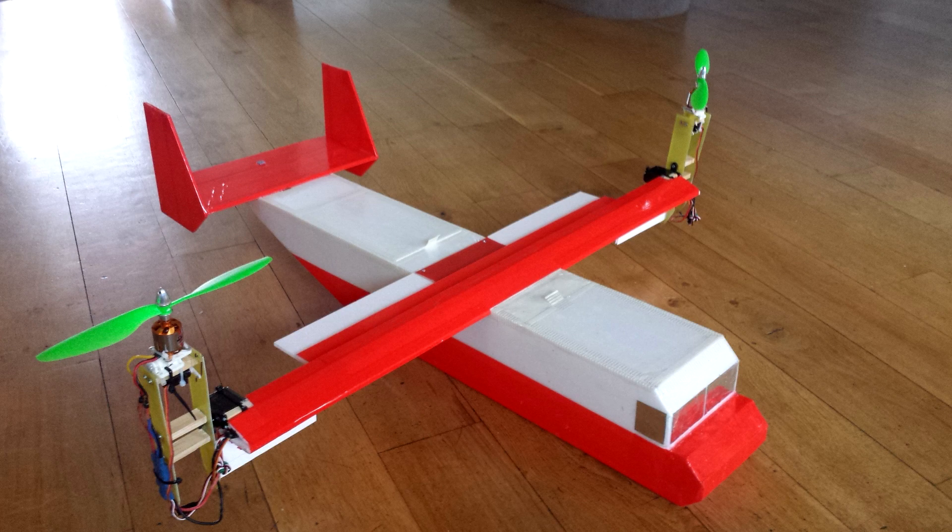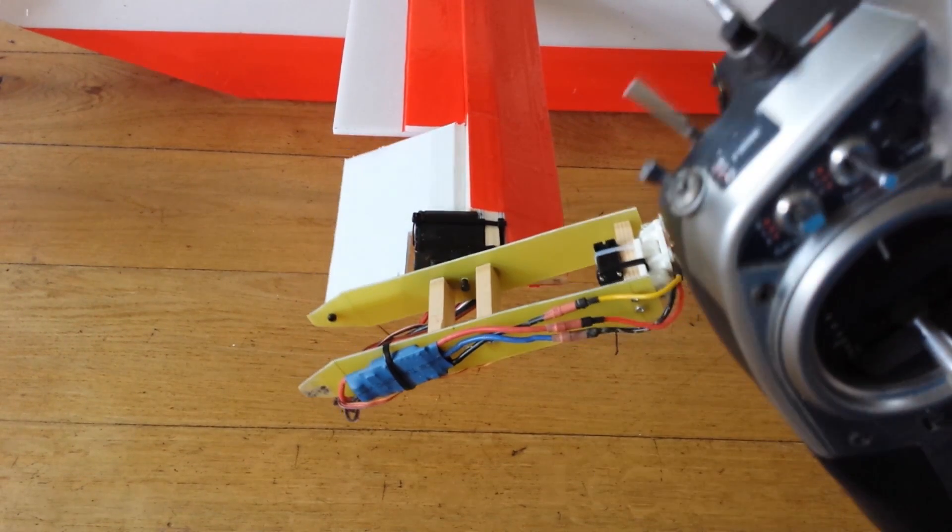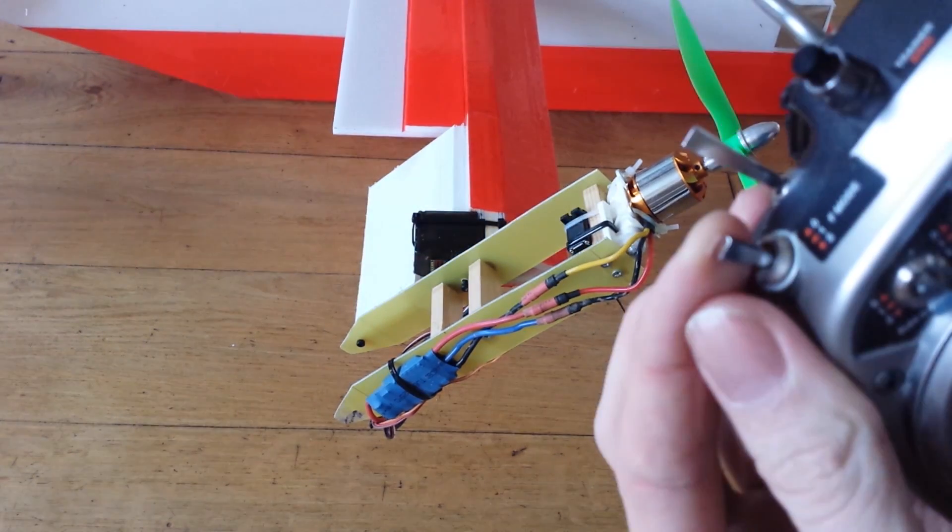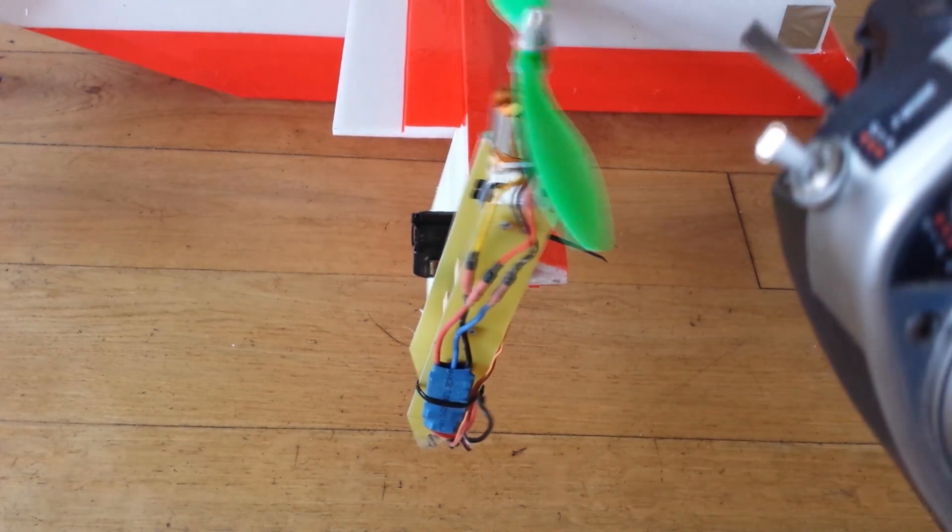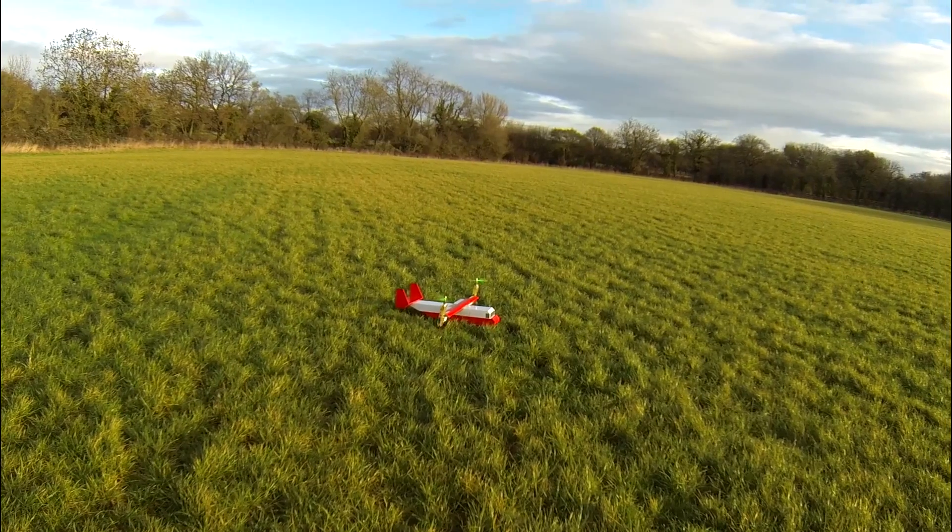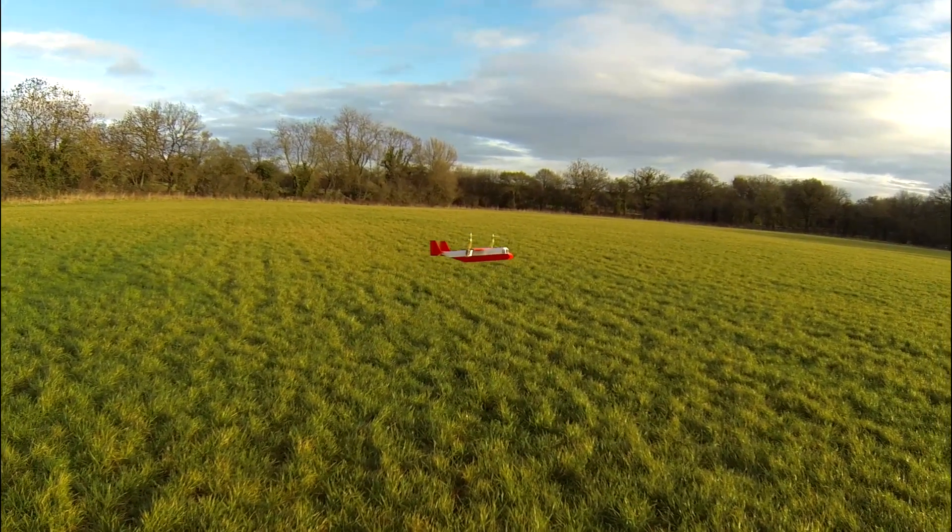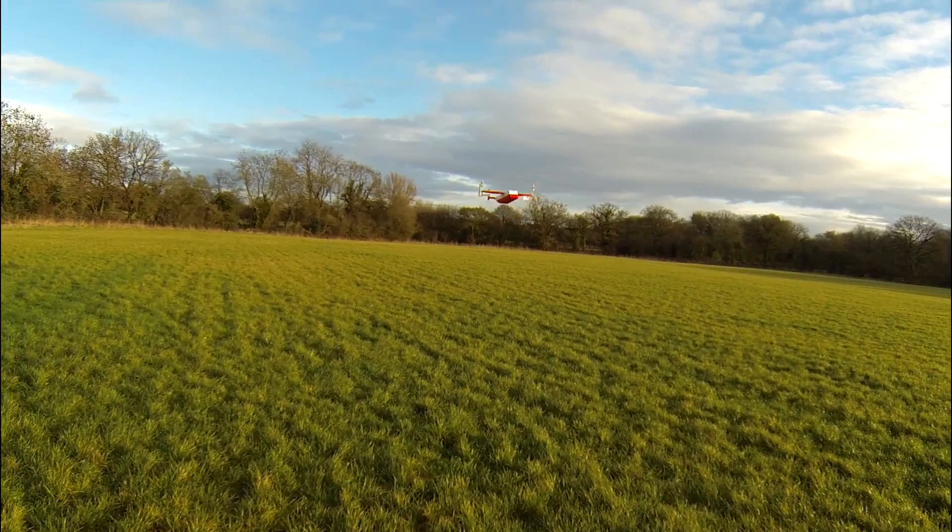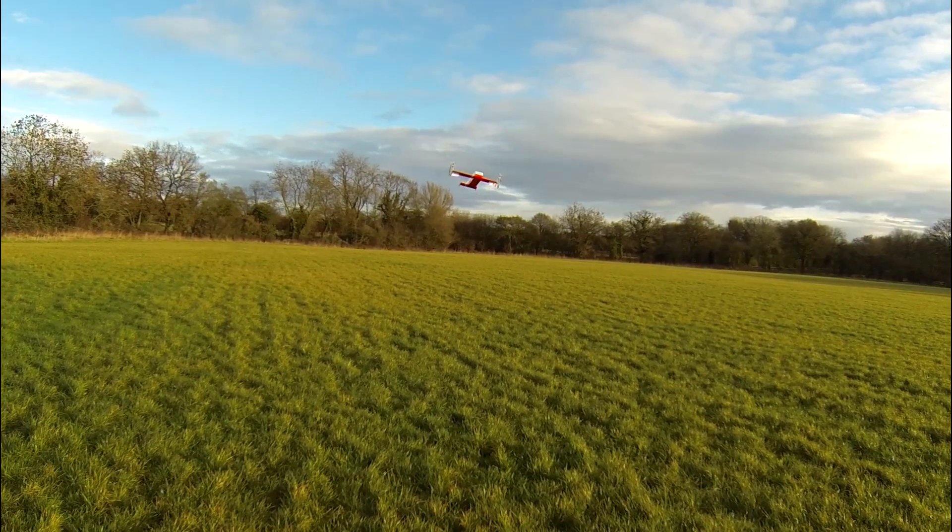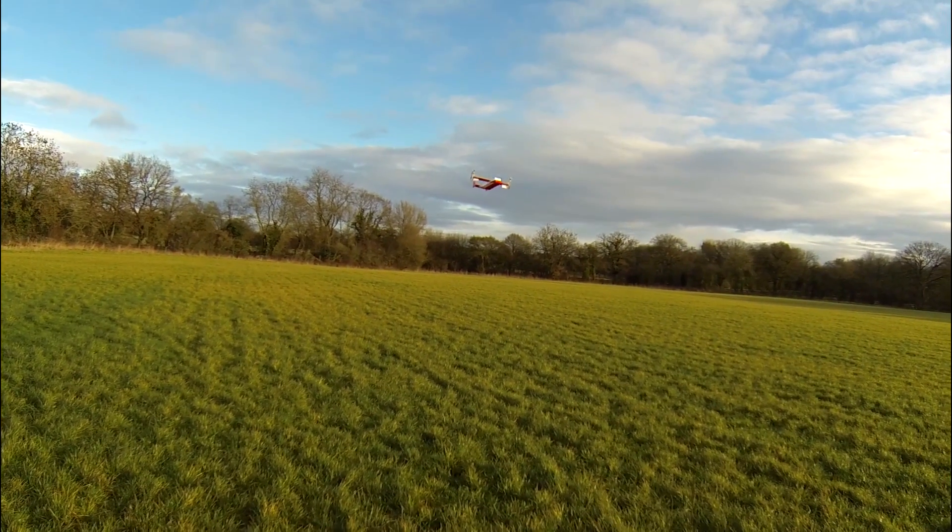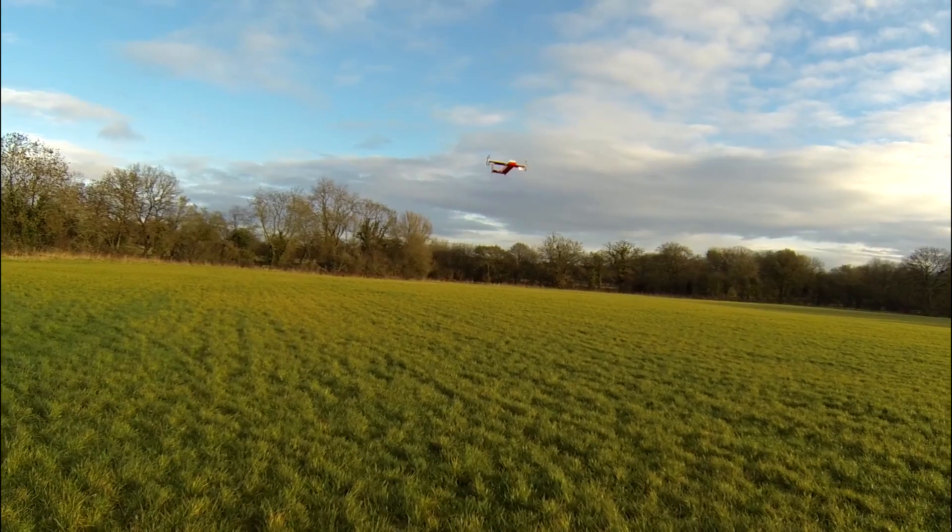Two years ago I built my first vertical takeoff plane. It was a fully functional tilt rotor that could transition from a hover to forward flight and back again. There were a few issues with the plane. It required two servos on each wing tip to operate the tilt and also the stability in a hover. It also didn't have a traditional airfoil, so in forward flight it kind of flew like a brick.